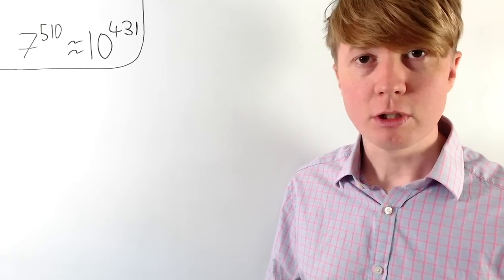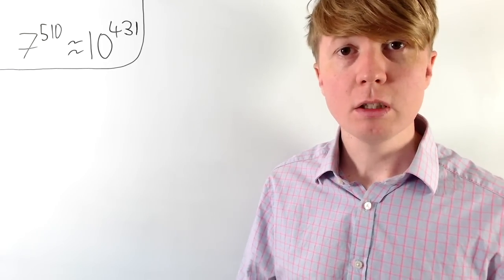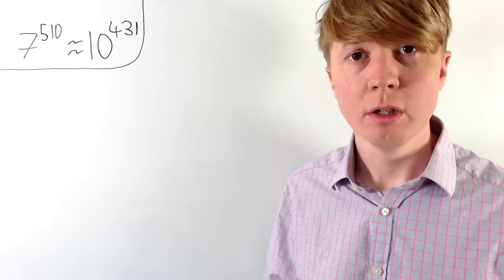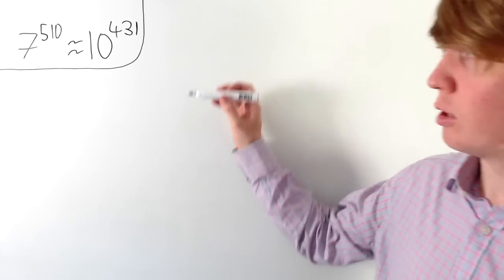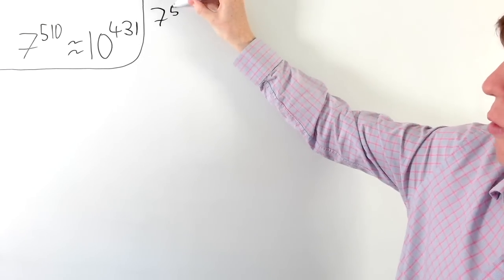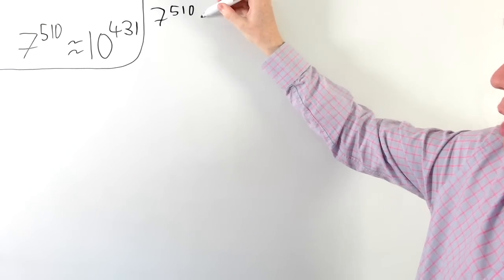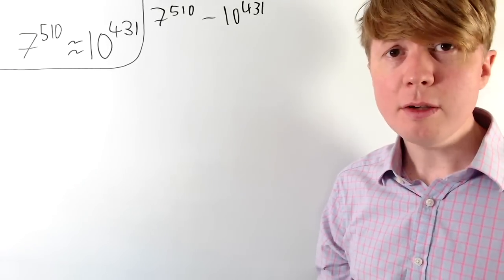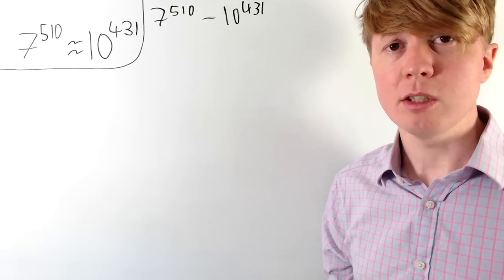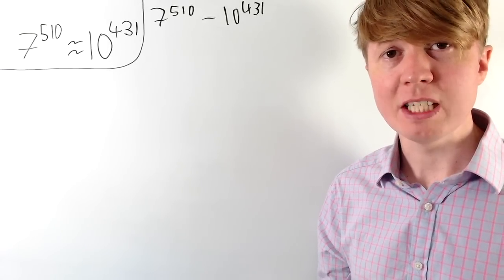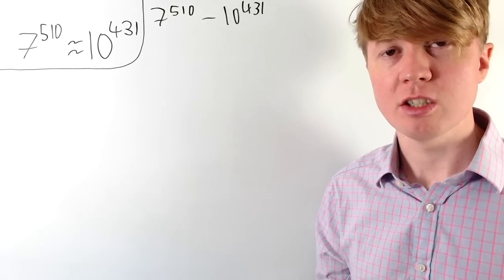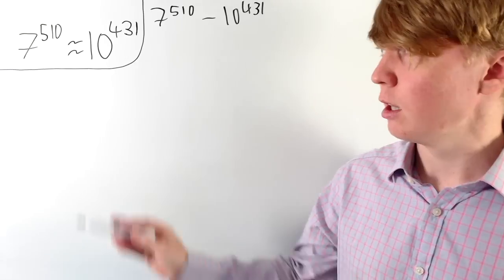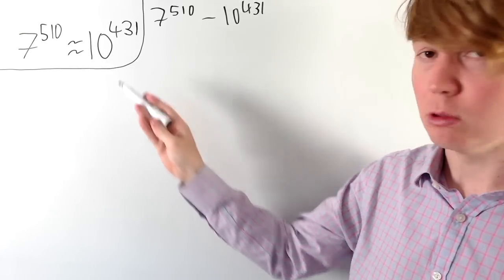7 to the power of 510 is really close to 10 to the power of 431. But if we actually calculate the difference between these two numbers — 7 to the 510 minus 10 to the 431 — the difference is actually a number with 425 digits, so it seems like they're nowhere near each other. So what do we mean when we say that they're approximately equal to each other?